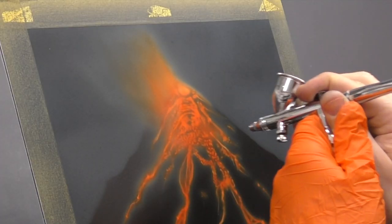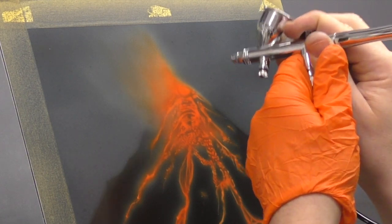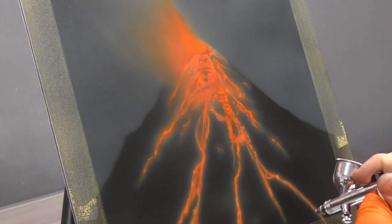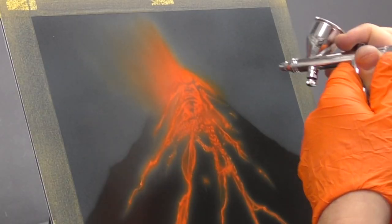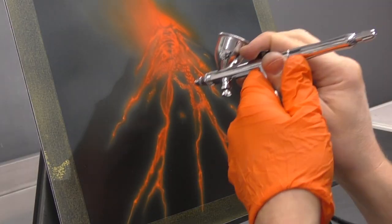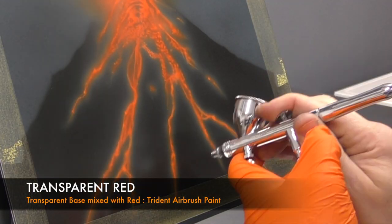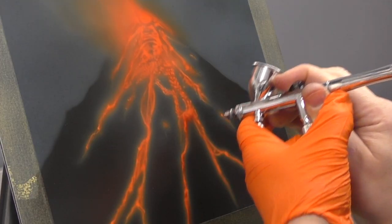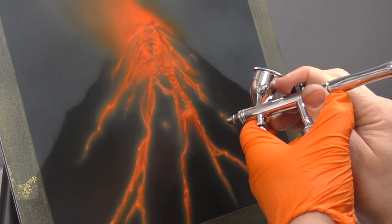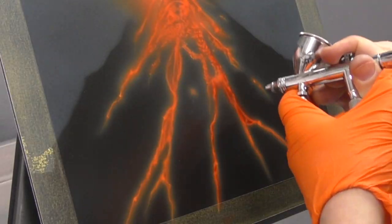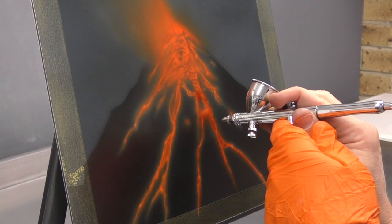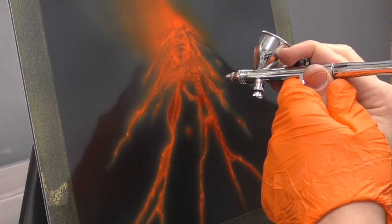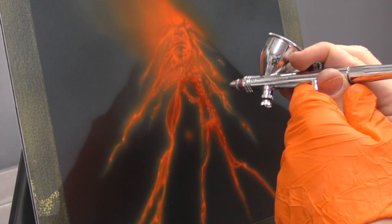So working back in certain areas of the design to brighten it up. Really want to get a nice bright orange base. Okay so now I've got a transparent red. And I just want to do a similar thing but I'm not going to go over everything this time. It's kind of hitting the edges. And allowing that overspray to mix in with the orange.